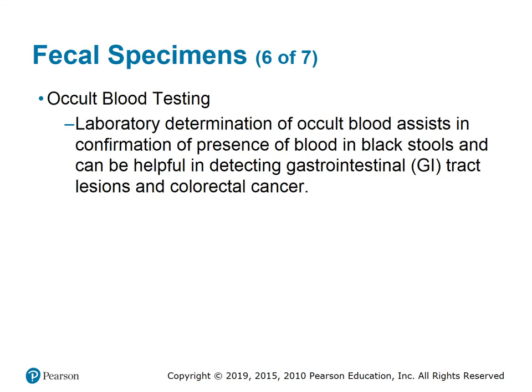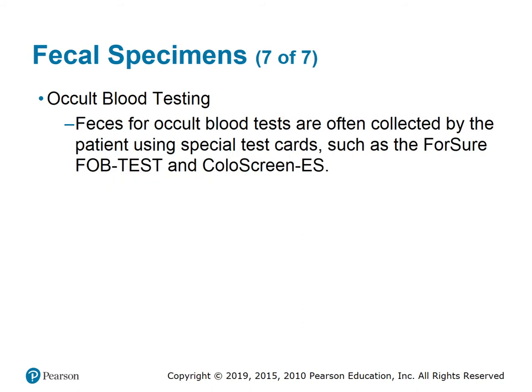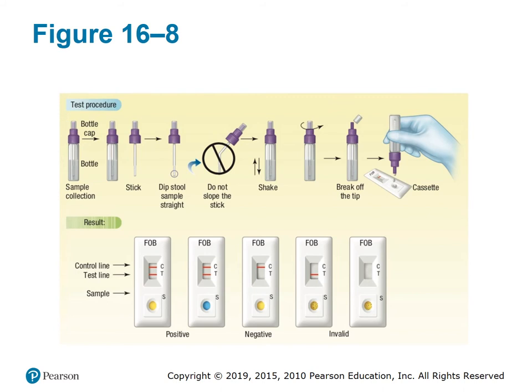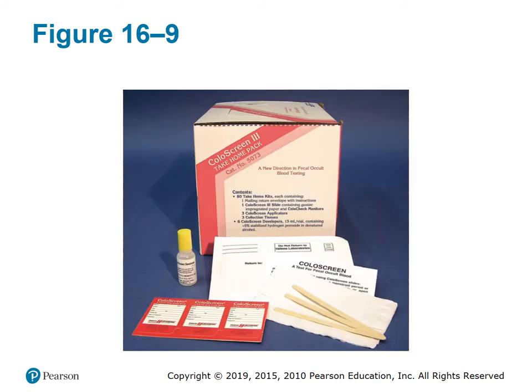Occult blood testing assists in confirmation of the presence of blood in stools and can be helpful in detecting gastrointestinal tract lesions and colorectal cancer. Feces for occult blood tests are often collected by the patient using special test cards such as Fecal Occult Blood tests and ColoScreen ES testing. There are also take-home kits; some patients turn them in to the office, while others order kits through their doctor, collect at home, and send to the company for testing.